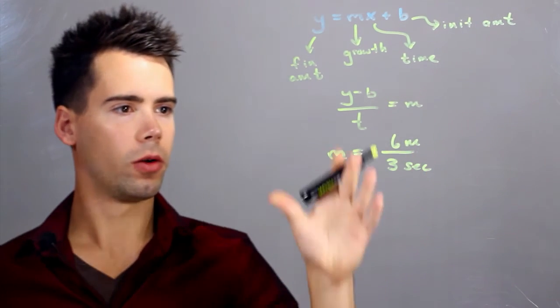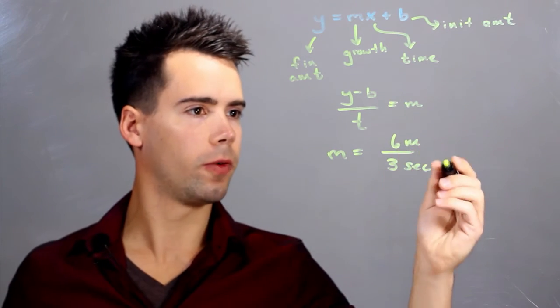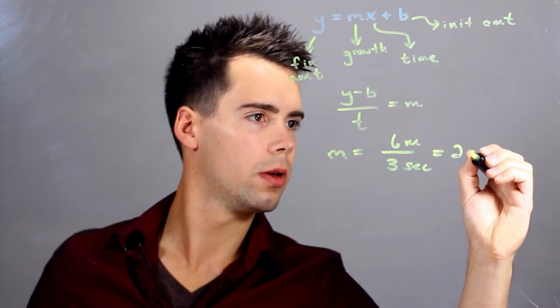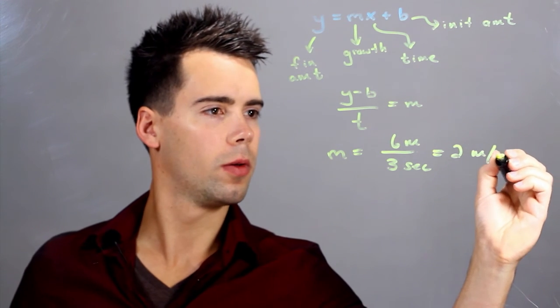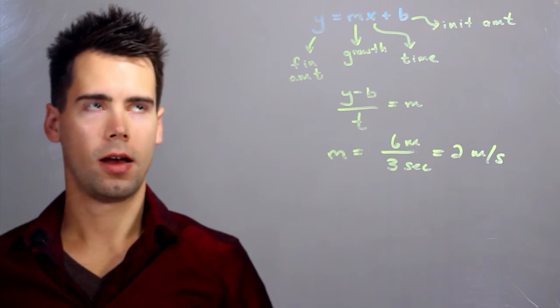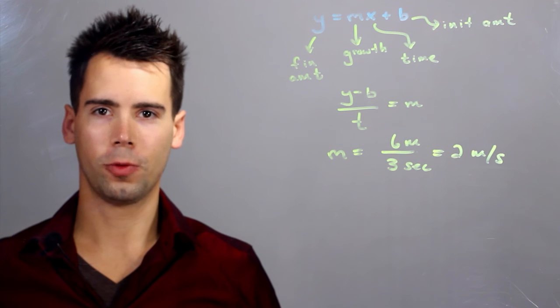And we find that our growth rate is equal to 6 meters over 3 seconds which is equal to 2 meters per second. I'm Ryan Ault and this is how to calculate linear growth with algebra.